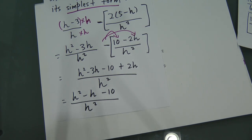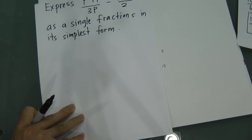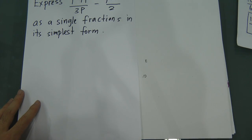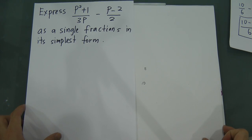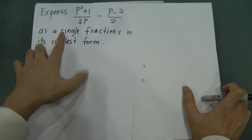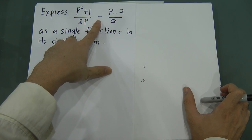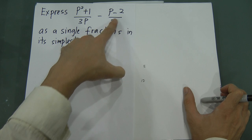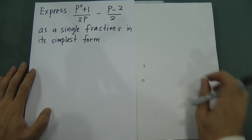The next example: express (p-squared plus 1) divided by 3p, minus (p minus 2) divided by 2, as a single fraction in its simplest form.